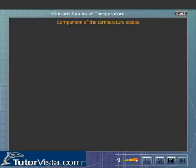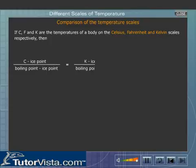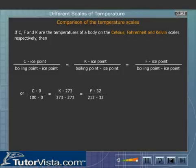Comparing temperature scales, if C, F, and K are the temperatures of a body on the Celsius, Fahrenheit, and Kelvin scales respectively, then: (C − 0) / (100 − 0) = (K − 273) / (373 − 273) = (F − 32) / (212 − 32).